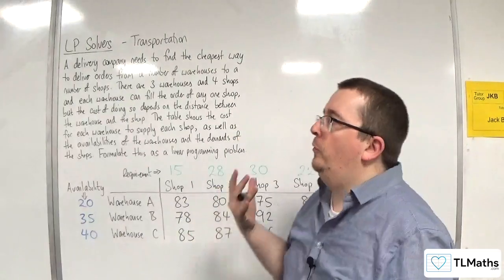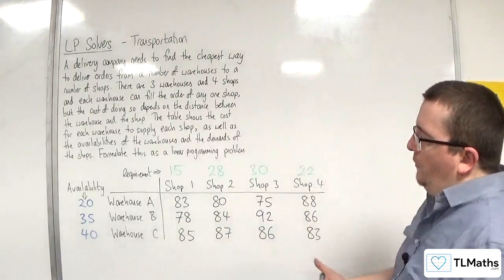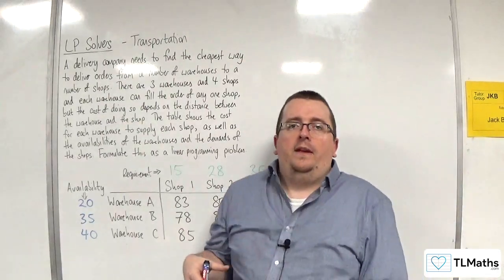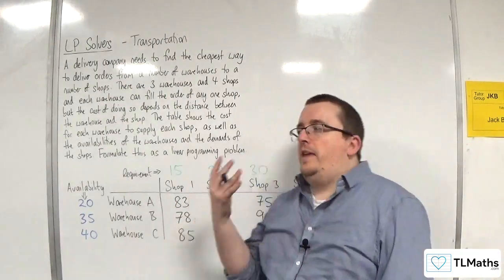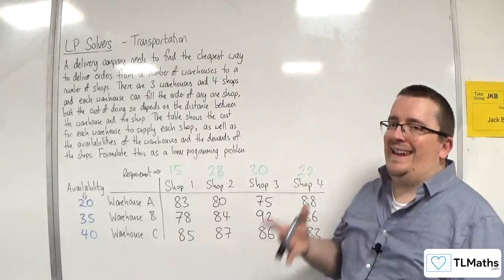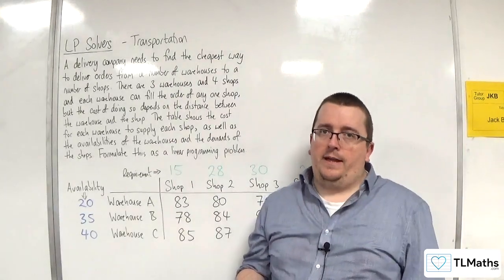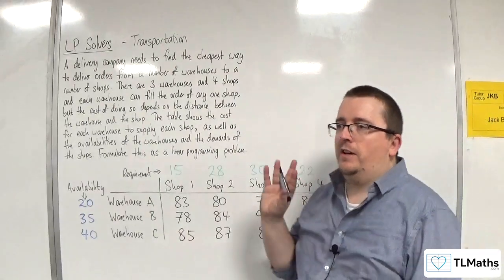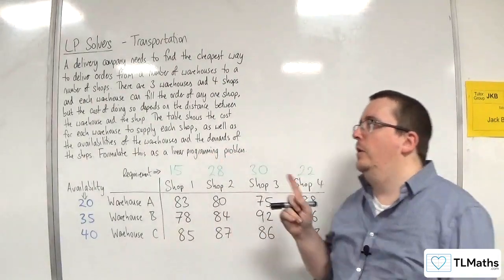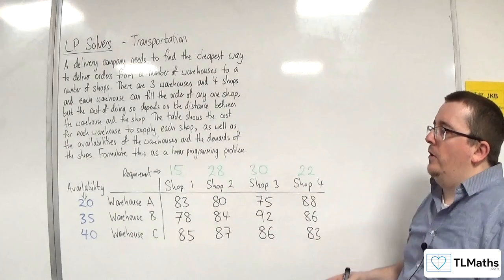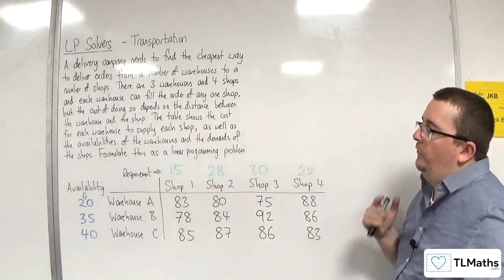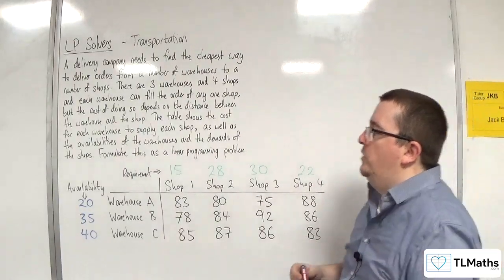In this video, we're going to look at a transportation problem. Now, a transportation problem is very similar to an allocation problem. However, the variables are no longer indicator variables. So this one could be a little bit more challenging to get through and see what's going on. I'll read out what the problem is, and then we'll see if we can interpret what this table is really showing.